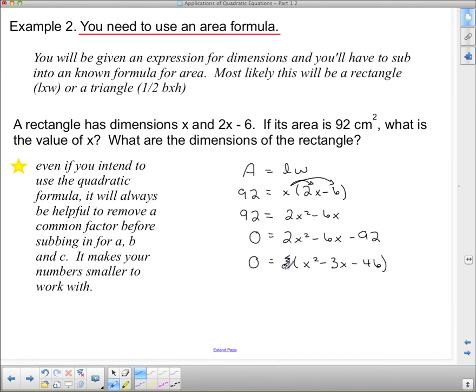And now I can just ignore this 2 out front. It actually has no bearing on the rest of the question. So, if I ignore that 2 out front, now what I'm going to use in the quadratic formula is a equals 1, b equals negative 3, and c equals negative 46. And I'm just going to do that for you right now.